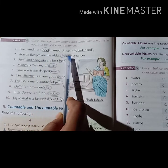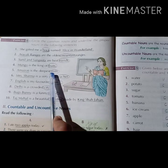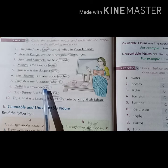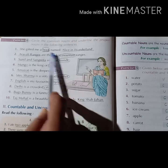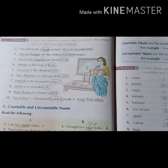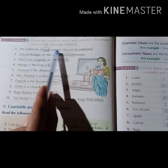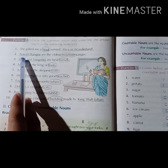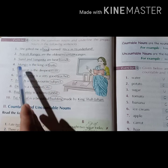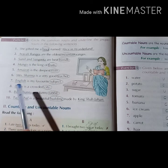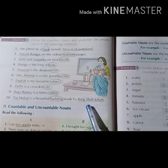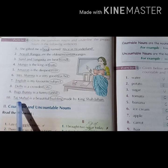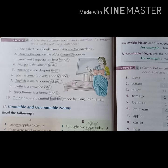So the common nouns to circle are: book, mountain, friend, fruit, river, teacher, subject, city, rabbit, building. All the circled words are common nouns. Now we have to underline the proper nouns. The proper nouns are: Alice in Wonderland, Rabli Ranges, Sunil and Sangeeta, Mango Amazon, Mrs. Sharma, English, Delhi, Bugs Bunny, Taj Mahal and King Shah Jahan. So I have underlined all the proper nouns.